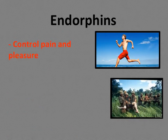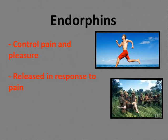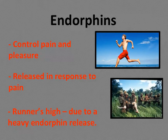Endorphins are neurotransmitters responsible for controlling pain and pleasure, and they are released in response to pain. In highly stressful situations — such as soldiers being shot in combat — the heavy release of endorphins can prevent people from feeling pain until after the stressful event is over. During rigorous exercise, a heavy release of endorphins is associated with what we call the runner's high — a feeling of euphoria — and people can actually become endorphin junkies, addicted to that feeling.